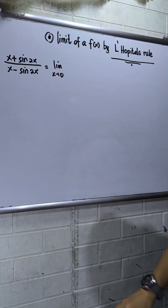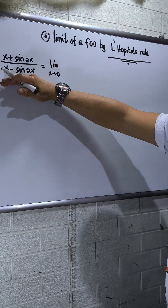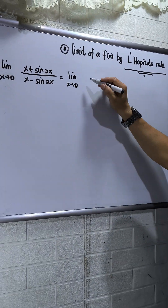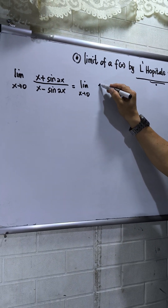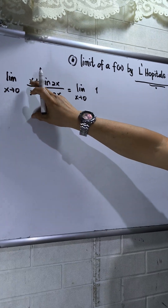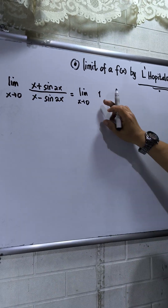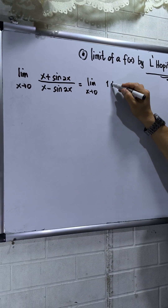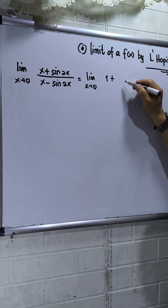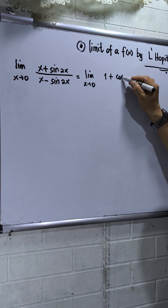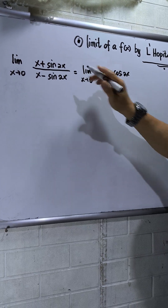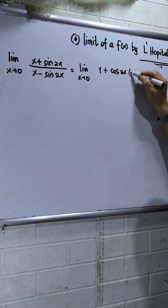I will differentiate the numerator and then the denominator. The numerator: derivative of x with respect to x is 1, then plus the derivative of sine 2x, which is cosine 2x, then times the derivative of 2x, which is 2.